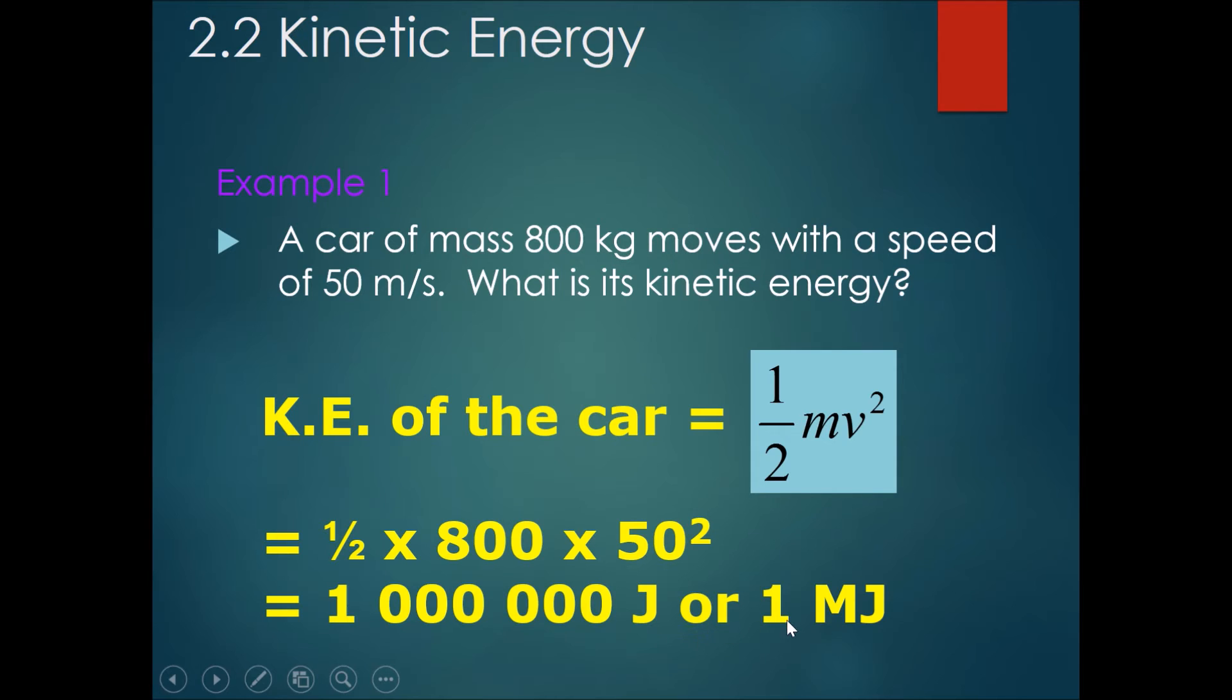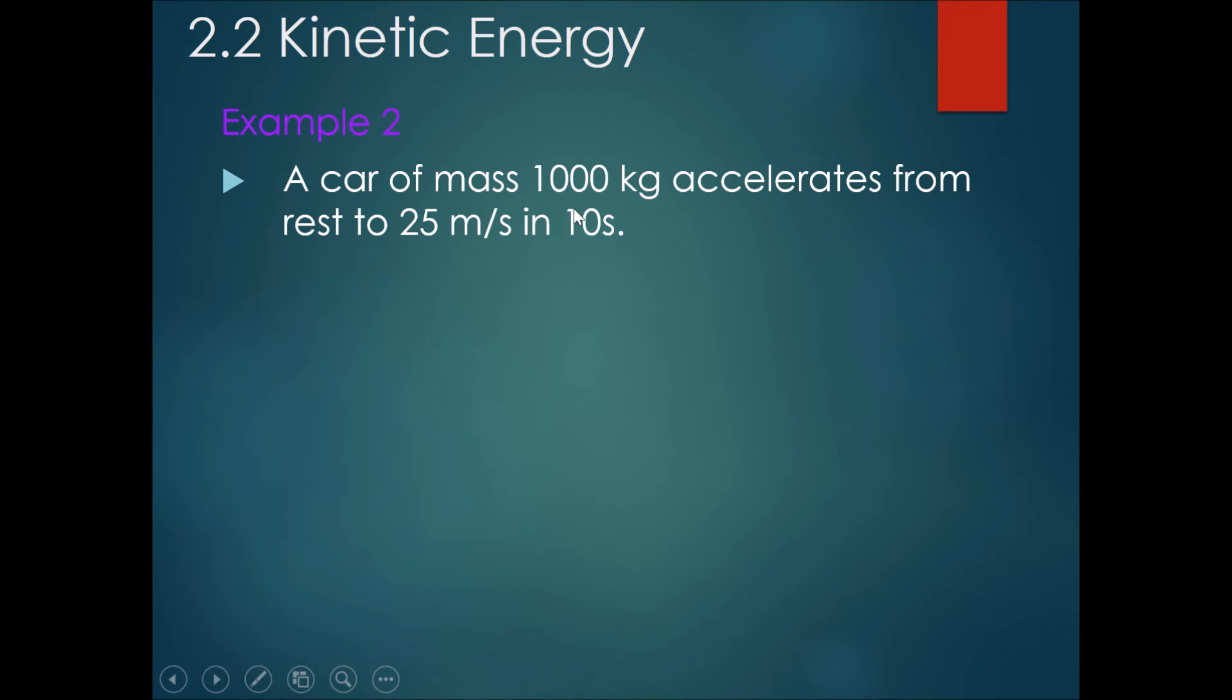In the second example, a car of mass 1000 kg accelerates from rest, which is 0 meters per second, to 25 meters per second in 10 seconds. Part A: calculate the maximum kinetic energy of the car. Please pause the video here and solve it.